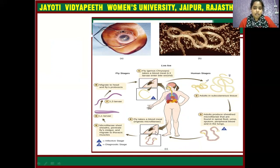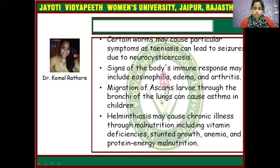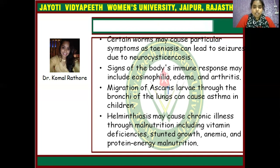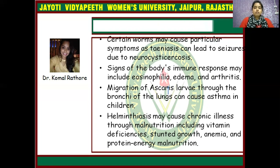The fly takes a blood meal and ingests microfilariae, which penetrate the fly's midgut and migrate to the thoracic muscles where they become larvae — larva one through three — then migrate to the head and the fly's proboscis, completing the life cycle. Certain worms may cause particular symptoms; for example, taeniasis can lead to seizures due to neurocysticercosis. Signs of the body's immune response may include eosinophilia, edema, and arthritis.